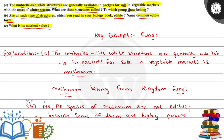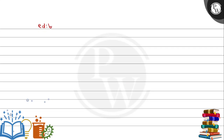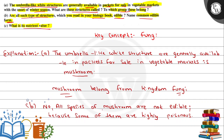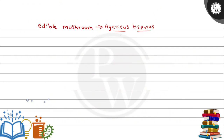If you consume poisonous mushrooms, it can even lead to death. So regarding edible mushrooms, an example of an edible mushroom is Agaricus bisporus — that is one edible mushroom we can consume. Not all mushroom species are necessarily edible; only some species like Agaricus bisporus are edible.